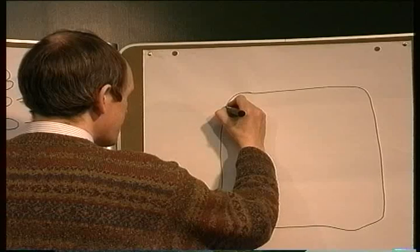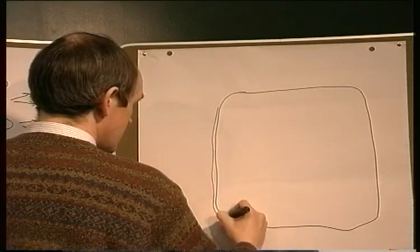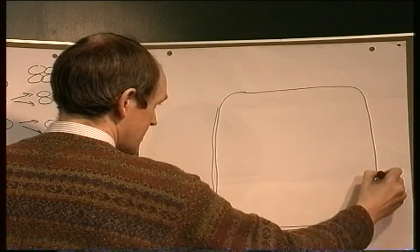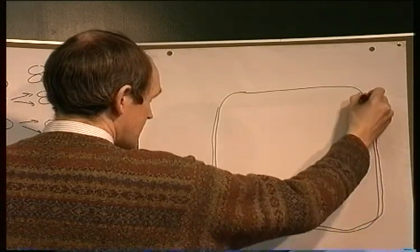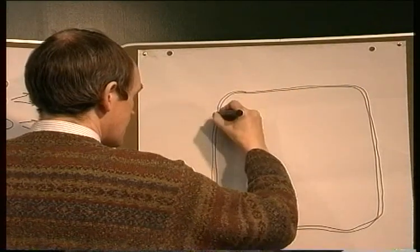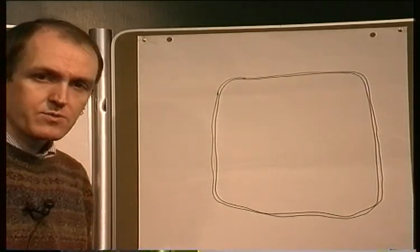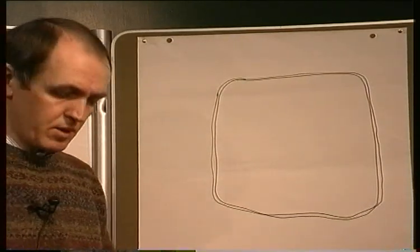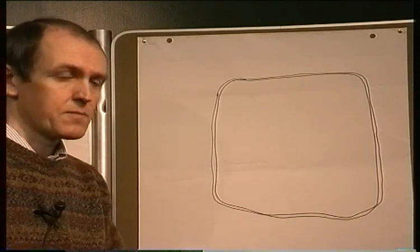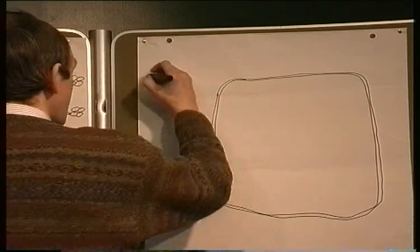But now when you look at the cell membrane, it appears to be in two layers. This is because of the arrangement of the molecules that make it up — it's actually referred to as a phospholipid bilayer. I'm not going to do that amount of detail at the moment, we'll come on to that later on. But it's still called the cell membrane.